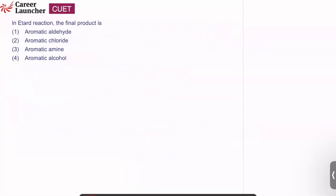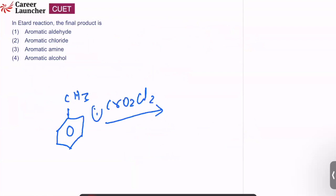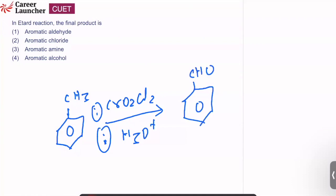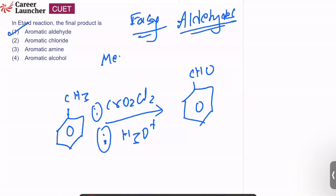Question number 2. In the Etard reaction, the final product is benzaldehyde. Benzene reacts with chromyl chloride followed by hydrolysis to give benzaldehyde, which is an aromatic aldehyde. Answer is option 1. This is an easy question from the aldehydes/ketones chapter. It is a memory-based question — if you memorize the reaction, you can easily answer this one.